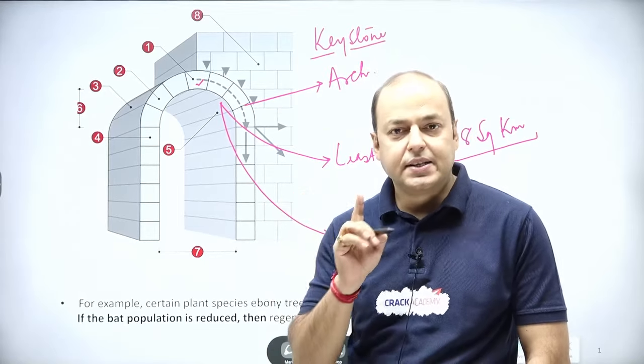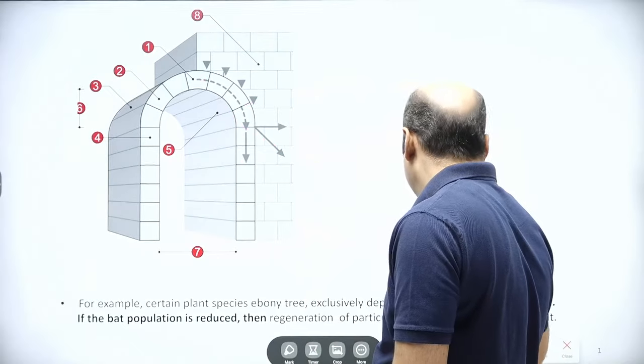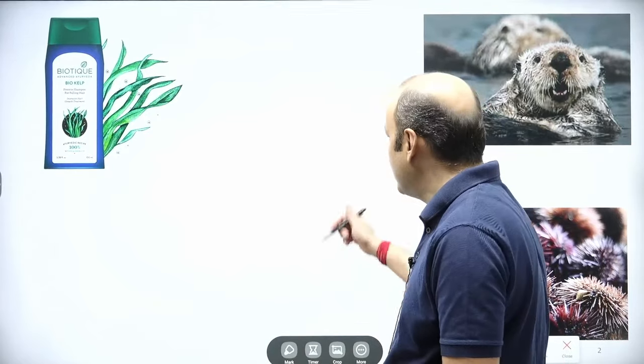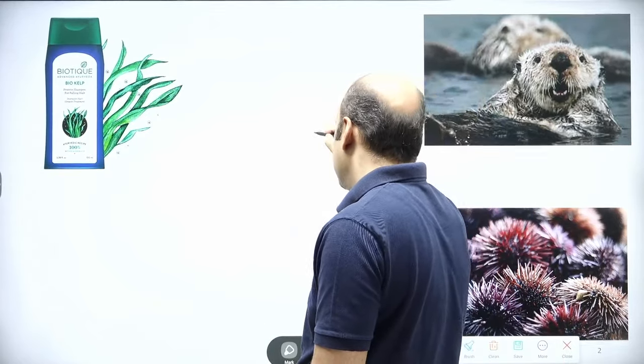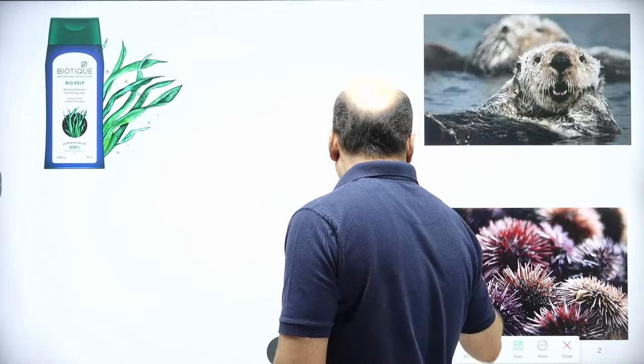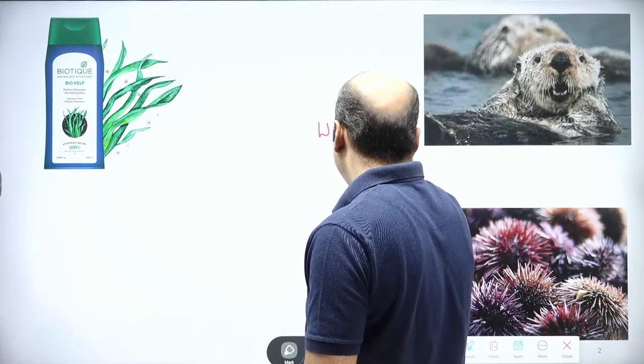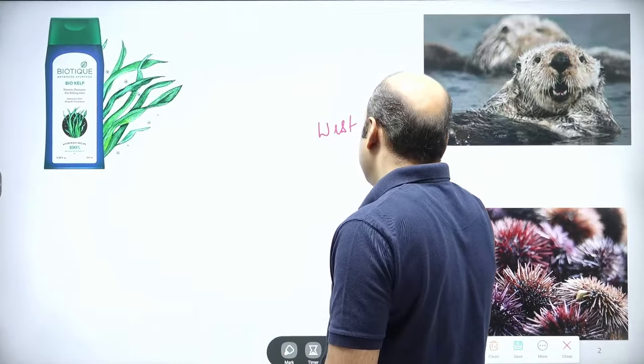In the same concept, there are certain species in an ecosystem which are keystone species. So there are several examples. Let us take an example which is very evident and very recent. In the west coast - this is a case study by the way - west coast of Florida...